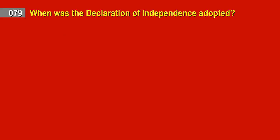Question 79. When was the Declaration of Independence adopted? Answer: July 4, 1776.